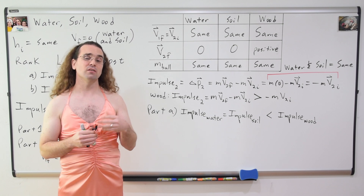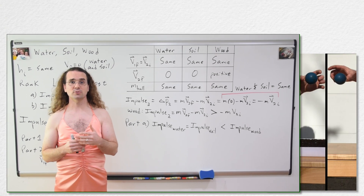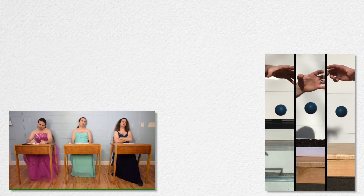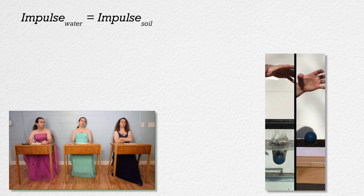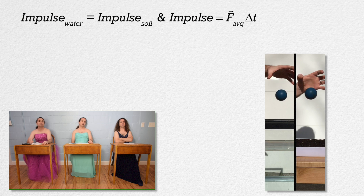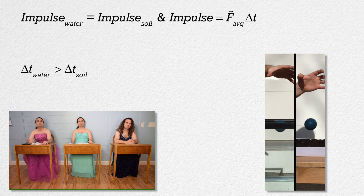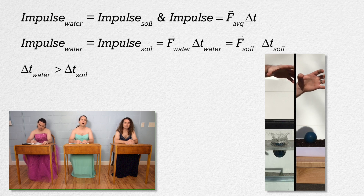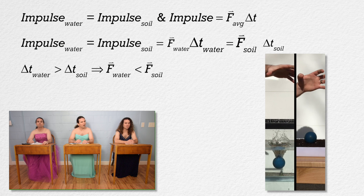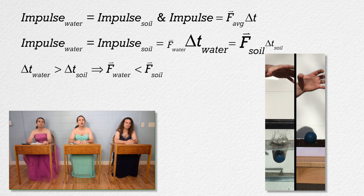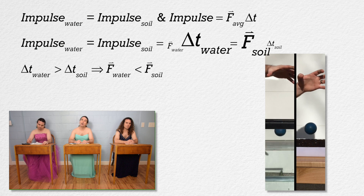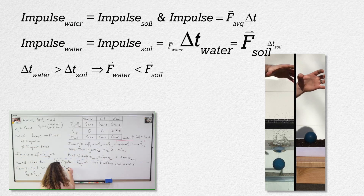Part B asks us to rank the force of impact during these three collisions in order from least to most. Let's start with water and soil, because the impulse is the same for both of those collisions. We know impulse also equals the average force of impact times the change in time during the collision, so we need to compare the changes in time. From the video, it looks like the change in time during the collision with the water is much larger than the change in time during the collision with the soil. Therefore, because the impulse during each of those two collisions is the same, the average force of impact during the collision with the water must be less than during the collision with the soil. Same impulse with a larger change in time for the water means a smaller average force of impact.